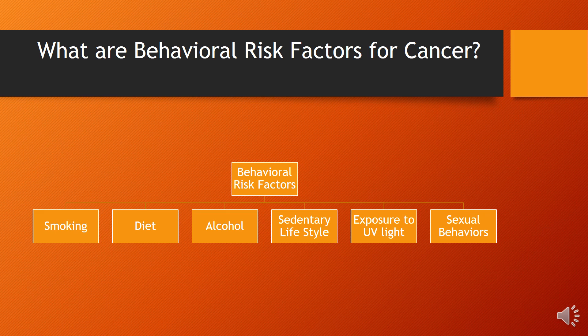A diet high in fruits, vegetables, whole grains, dairy products, beans, and meat provides a healthy lifestyle and may reduce the possibility of experiencing cancer. Poor diet can also relate to overweight — what an individual eats may cause weight gain, and obesity is interlinked with the development of cancer.